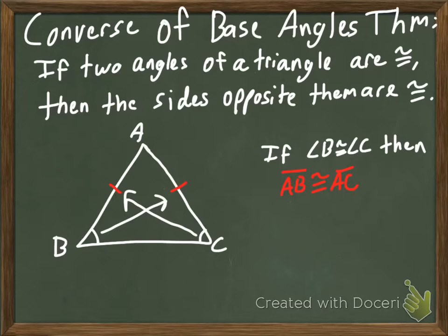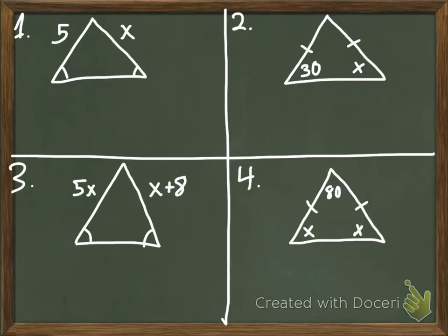And where we see these theorems helpful is if we're trying to find missing sides or missing angles in a triangle. So we have four examples here. I want you to pause this video and work with your group to try to solve for the missing variables in these four examples. Go ahead and do that now.